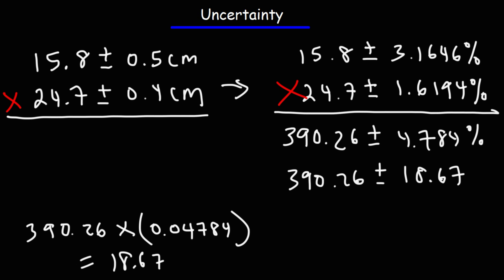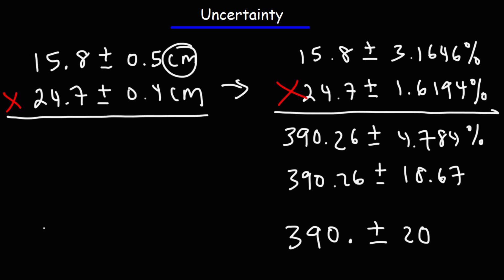So looking at our original numbers, we see that they have 3 significant figures. So around 390.26 to 3 significant figures, we could say it's simply 390 with a decimal point, which will make the 0 significant. Now looking at our uncertainty, the 0.5 or the 0.4, it only has one significant digit. So let's round 18.67 to a number with one significant digit. And that's going to be 20 without a decimal point. So the 0 is not significant. And then we need to put the unit centimeters. So this is the answer for this problem.